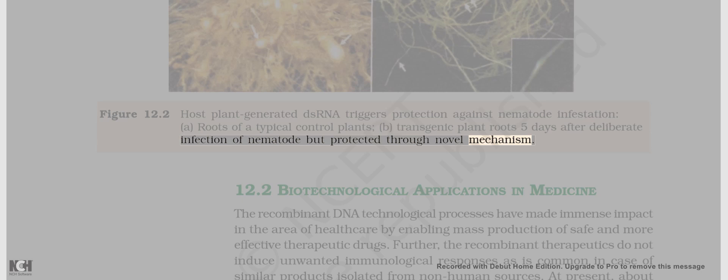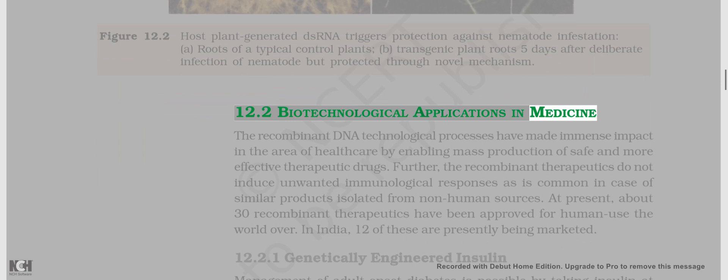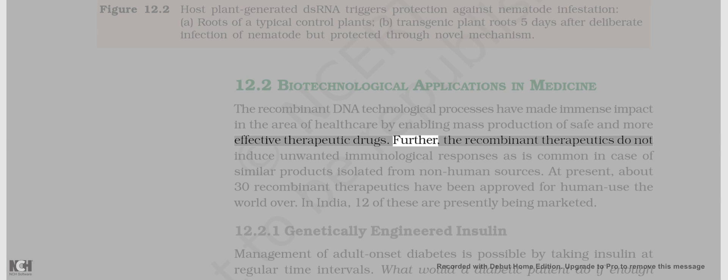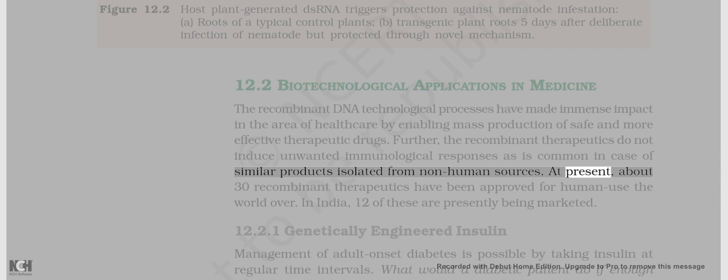12.2 Biotechnological Applications in Medicine. Recombinant DNA technological processes have made immense impact in the area of healthcare by enabling mass production of safe and more effective therapeutic drugs. Further, the recombinant therapeutics do not induce unwanted immunological responses as is common in case of similar products isolated from non-human sources. At present, about 30 recombinant therapeutics have been approved for human use the world over. In India, 12 of these are presently being marketed.